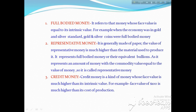Next is representative money. It is generally made of paper. The value of representative money is much higher than the material used to produce it. Since it is made up of paper, its value is very less as a commodity. But it represents full-bodied money — it represents gold, silver, and huge amounts of bullions, etc.